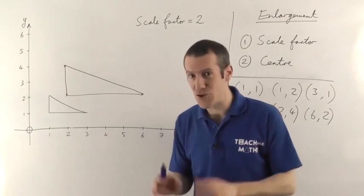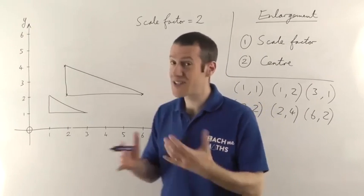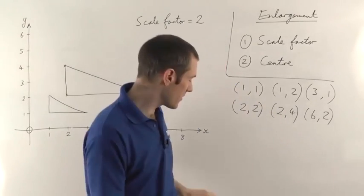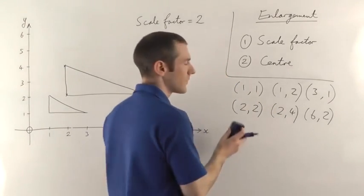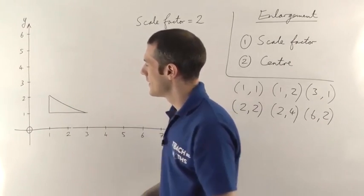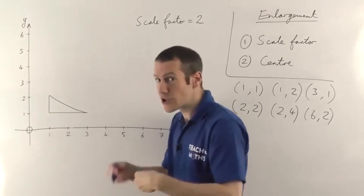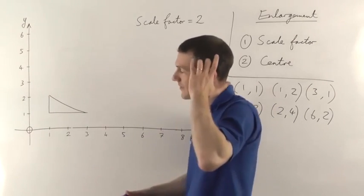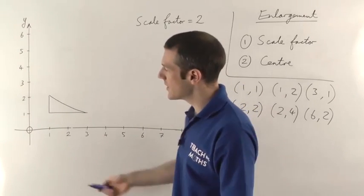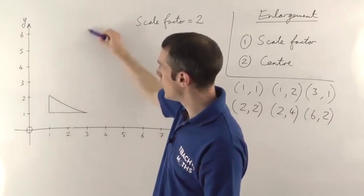If the centre of enlargement is not the origin, you have to use a completely different method. But most of the time you will find the centre is the origin. Let me show you the other method. I'll leave those coordinates there so we can compare them later, and I'm going to leave the centre of enlargement as the origin, but show you the other method so you can compare them. Essentially what you have to do is, with a ruler, draw a straight line from the origin through each corner of the shape and then off into the distance.